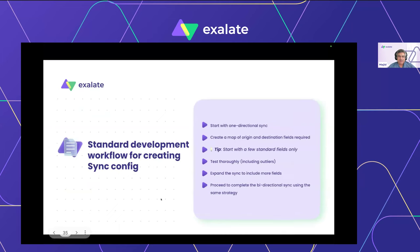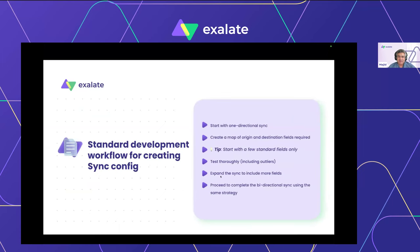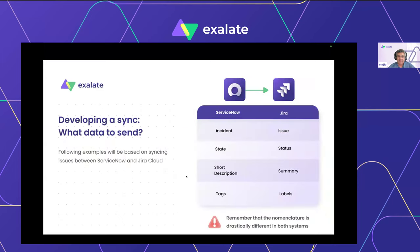I'll include a debugging example within the scripts because it's very useful to have while working with Exalate. For starting a project, we recommend a one-directional approach first — don't go all in at once. Start from ServiceNow to Jira, start with a subset of standard fields, and play around with those. Also, have a mapping document of originating fields to destination fields — what field on the origin maps to what field on the destination side.